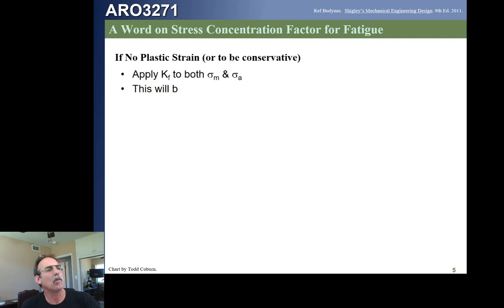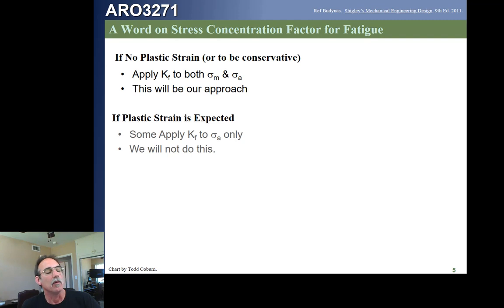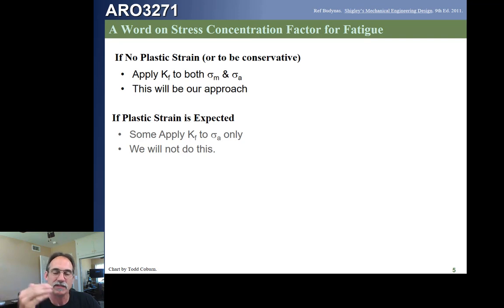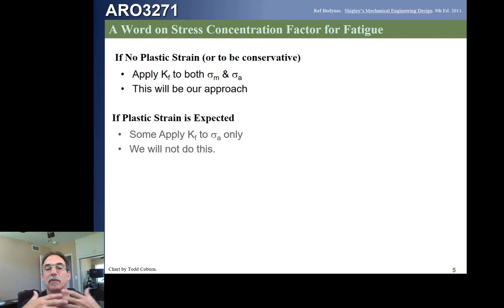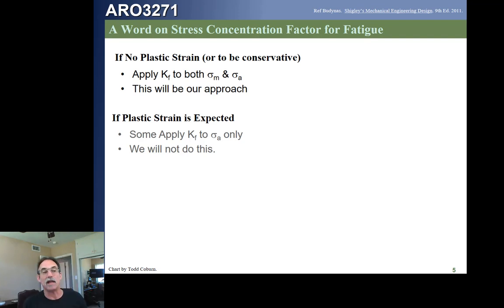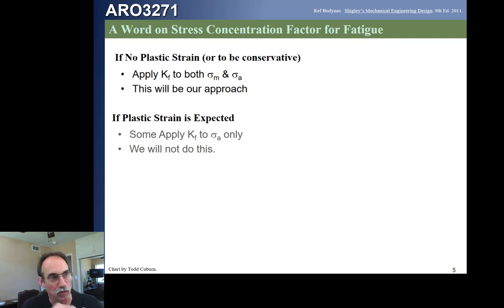Before we go on — in this class, for general fatigue, we're going to apply our stress concentration factor to both the mean and the alternating component. However, you need to be aware that some places, some people, some parts will use a different approach. Particularly, one of those cases would be if we expect plastic strain. If you have plastic bending, that peak stress concentration factor kind of evens out when going into the fully plastic range, and in that case they often won't apply it to the mean stress — only to the alternating stress.